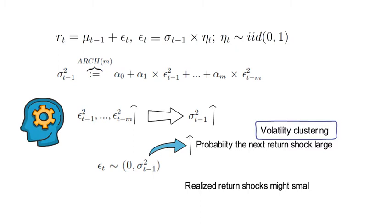Third, realized return shocks might be small even though the variance ex ante was high. Now that happens if the realization of the IID shock was small. Last but not least, knowing that the variance of the upcoming return is high does not imply that the investor knows the sign of the next shock. For returns, the standard pattern is low predictability in first moments and rather good predictability in second moments.